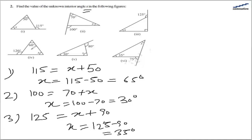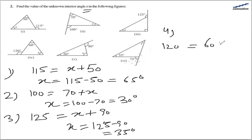In the fourth part, the exterior angle is 120 degrees, and the opposite interior angles are 60 and x. So x is equal to 120 minus 60, that is equal to 60 degrees.